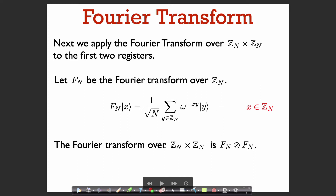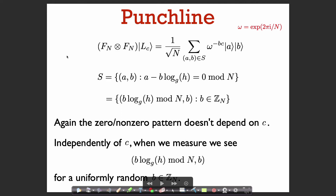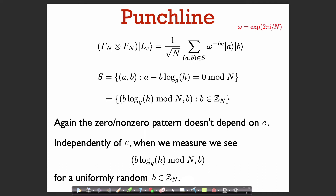The Fourier transform over Z_n times Z_n is just going to be the tensor product of F_n with itself. The punchline is that when we apply F_n tensor F_n to this coset state, what we're going to get is a uniform superposition over elements (a, b) in a set S — with some phase that's not going to be important for us. S is the set of elements of the form b times log base g of h mod n, comma b, where b ranges over Z_n.